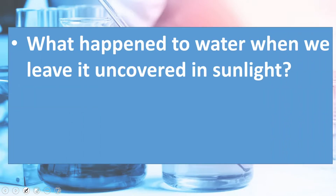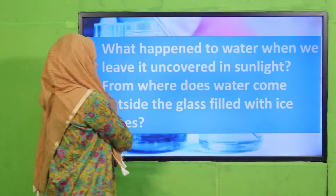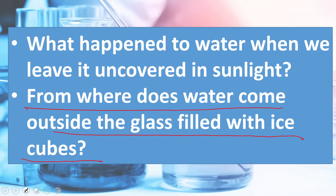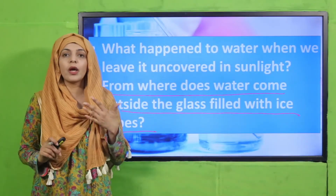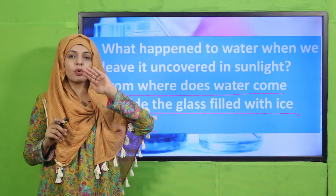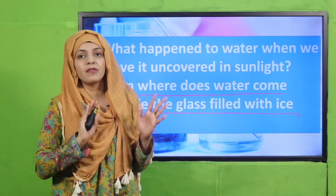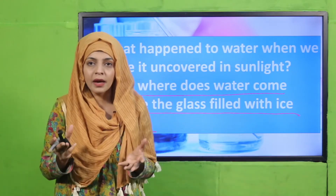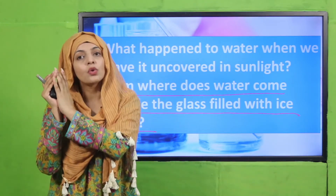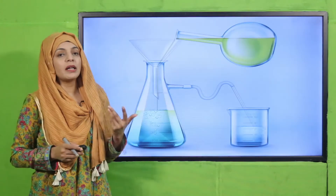Now the pre-reading questions. Quickly tell me: what happens to the water when we leave it uncovered in sunlight? Jab aap suraj ki roshni mein paani ko khula chhod dete hain toh kya hota hai — it changes into gas, water vapors. Now tell me, from where does water come from outside a glass filled with ice cubes? Jab thandi surface se hawa takrati hai toh woh paani ki shakal ikhtiyar kar leti hai. We will also do an experiment on this ahead in this lecture.